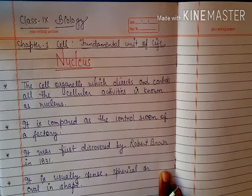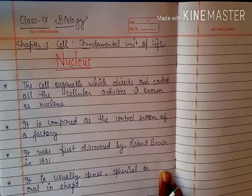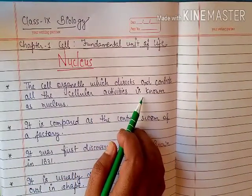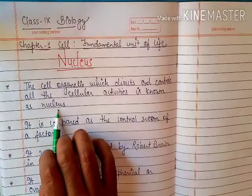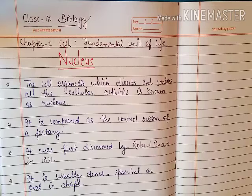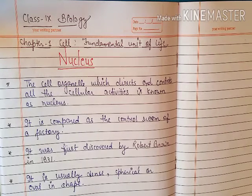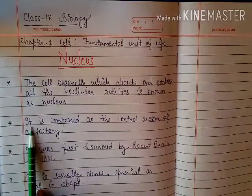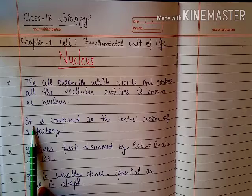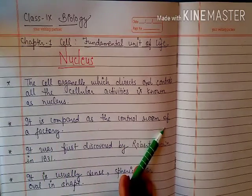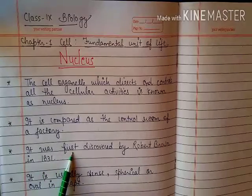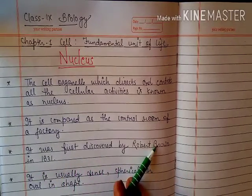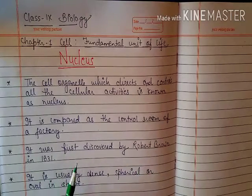Nucleus is the cell organelle which directs, controls, governs, and instructs all the activities of the cell. It is compared to the control room of a factory because it controls all the activities of the cell. This cell organelle was first discovered by the scientist Robert Brown in 1831.